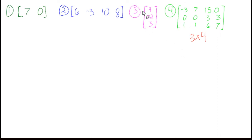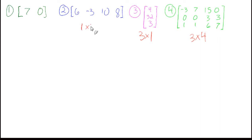These become tricky when one of the dimensions is 1. This one is 3 tall and 1 wide — 1 column wide. This one is 1 tall by 1, 2, 3, 4. It's weird to think each column only has one thing in it, but that's how it works. So this one would be 1 by 2. That's the order of those 4 matrices.